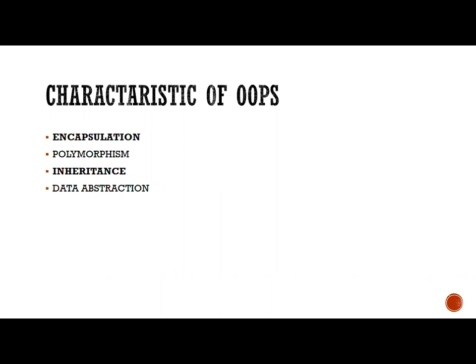In the last lecture, we had seen what is the meaning of object-oriented programming. We had seen what is the class and what are the objects. Apart from that, how to define the objects, how to make the declarations, how to consider the declarations of functions, how to define those functions and how to use those functions — the basic things regarding object-oriented programming in C++ we have already seen.